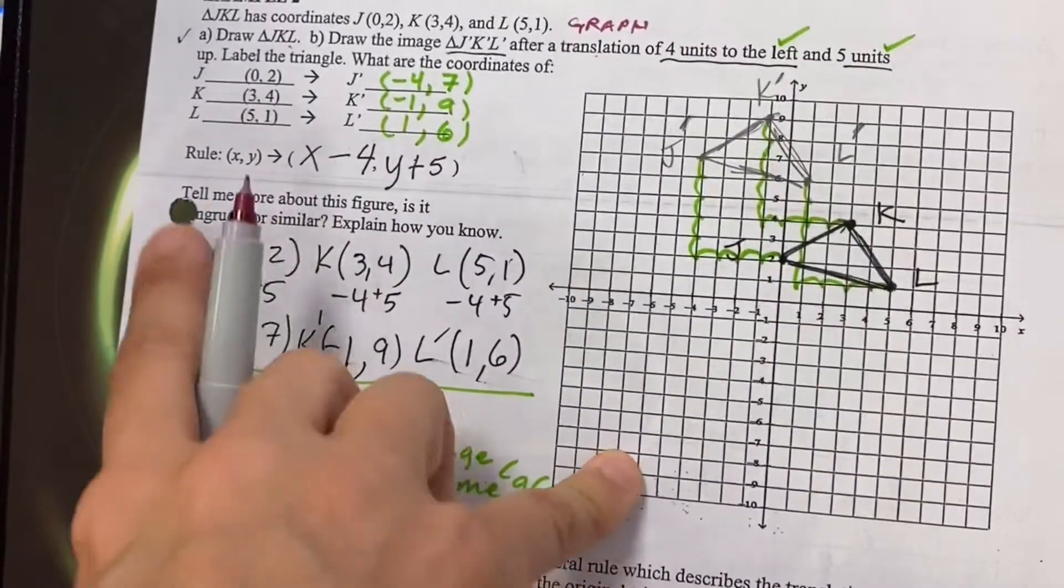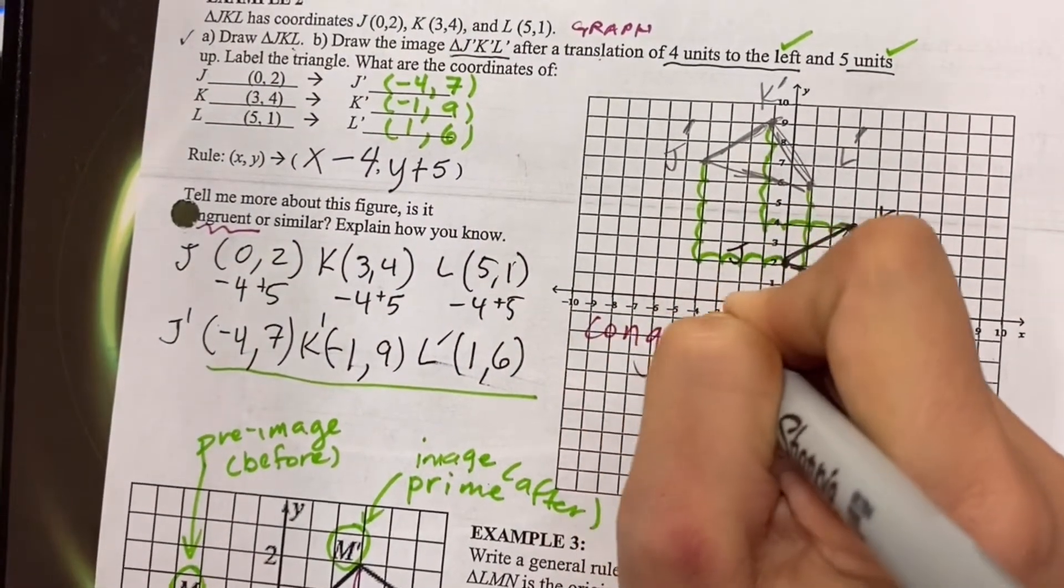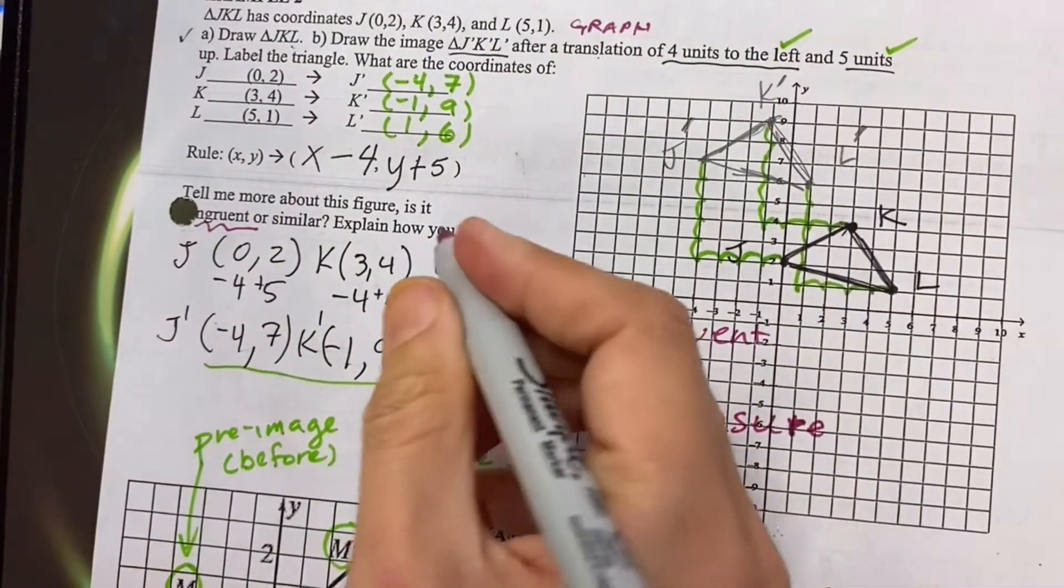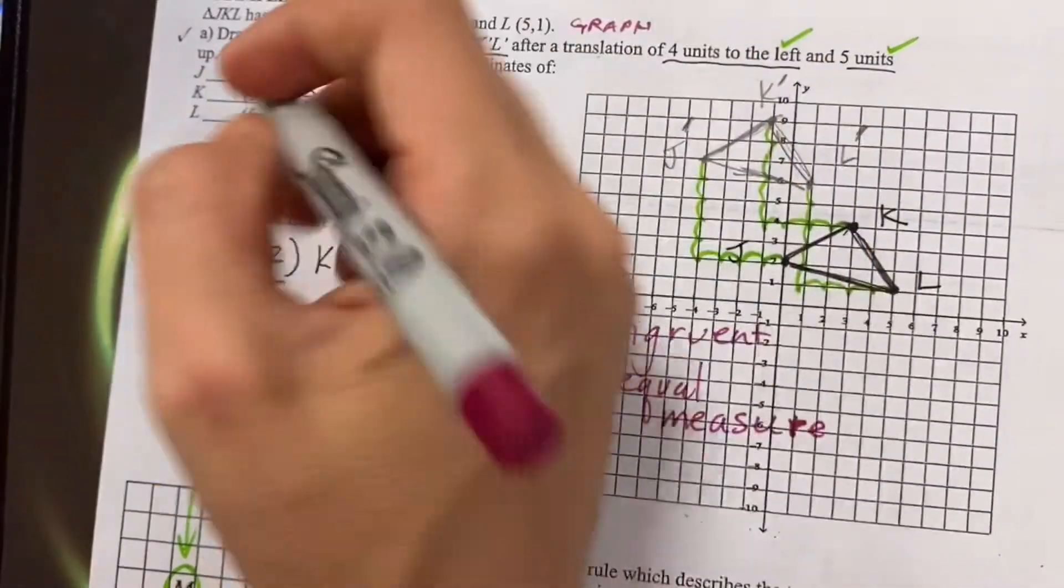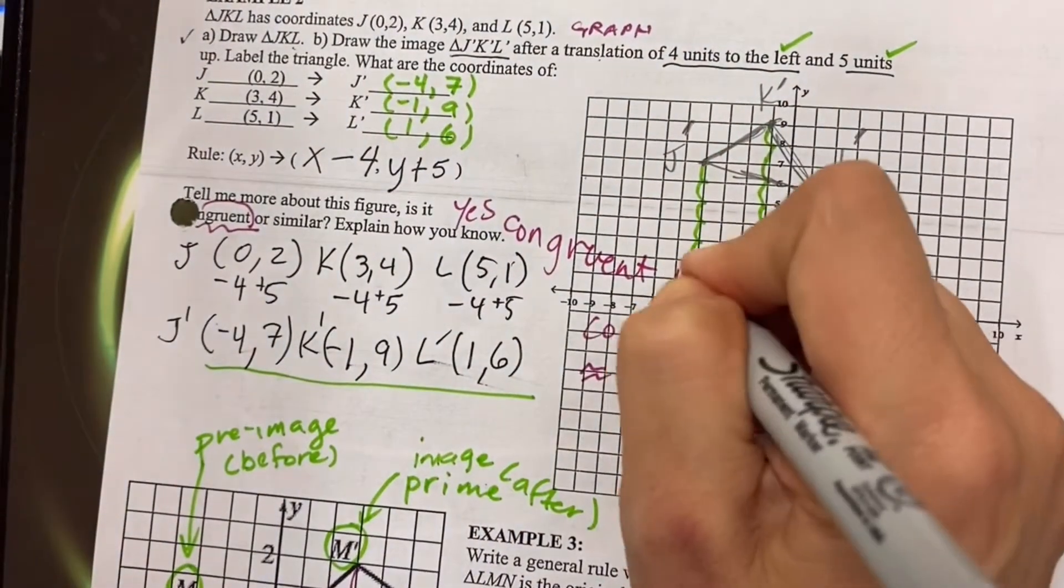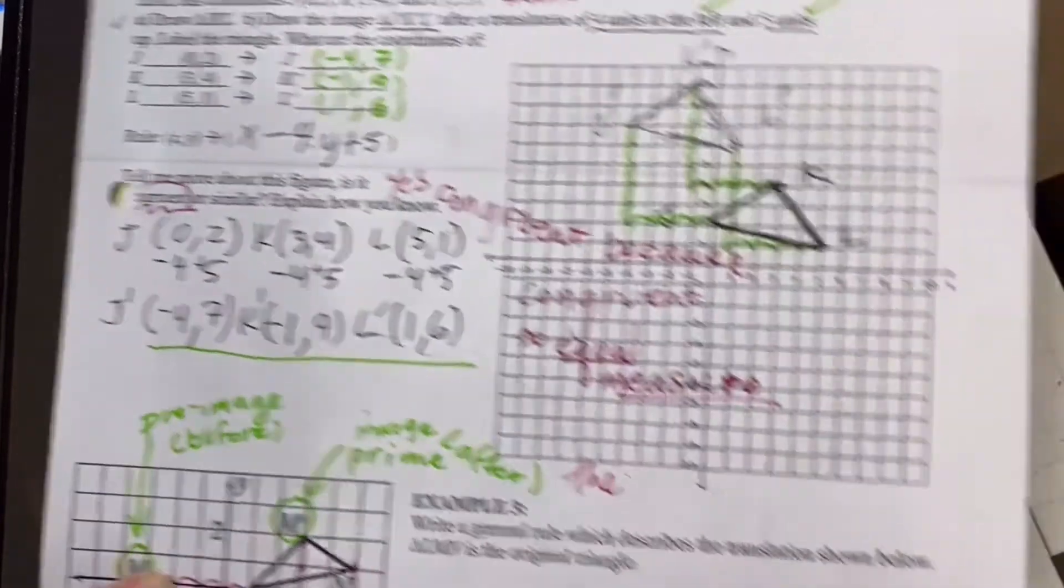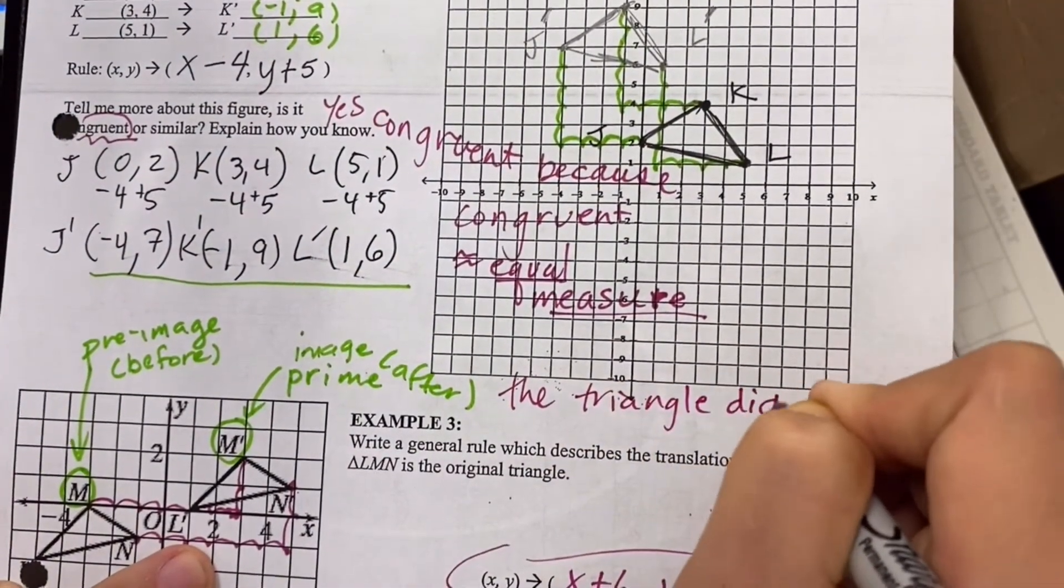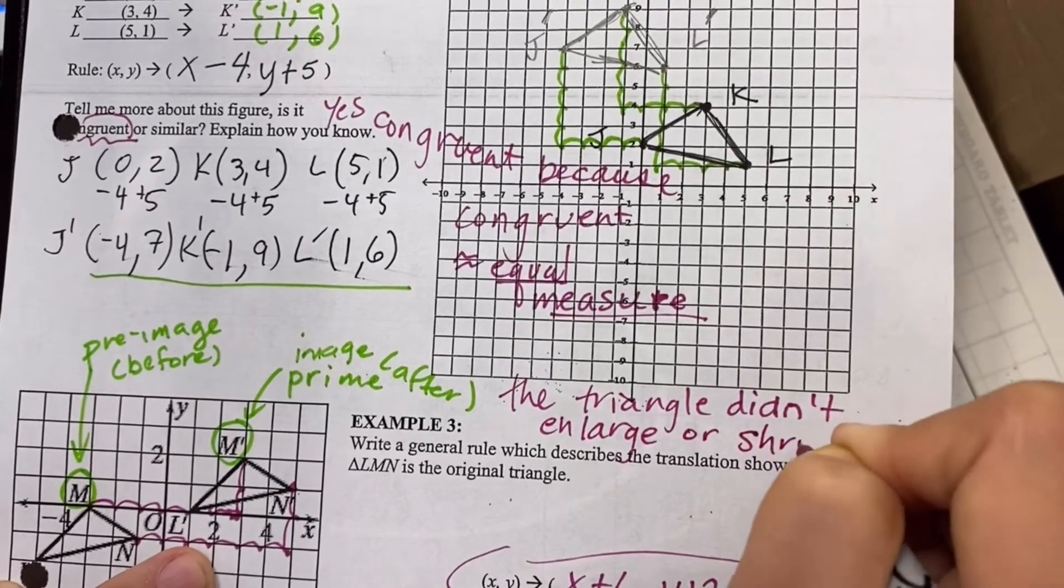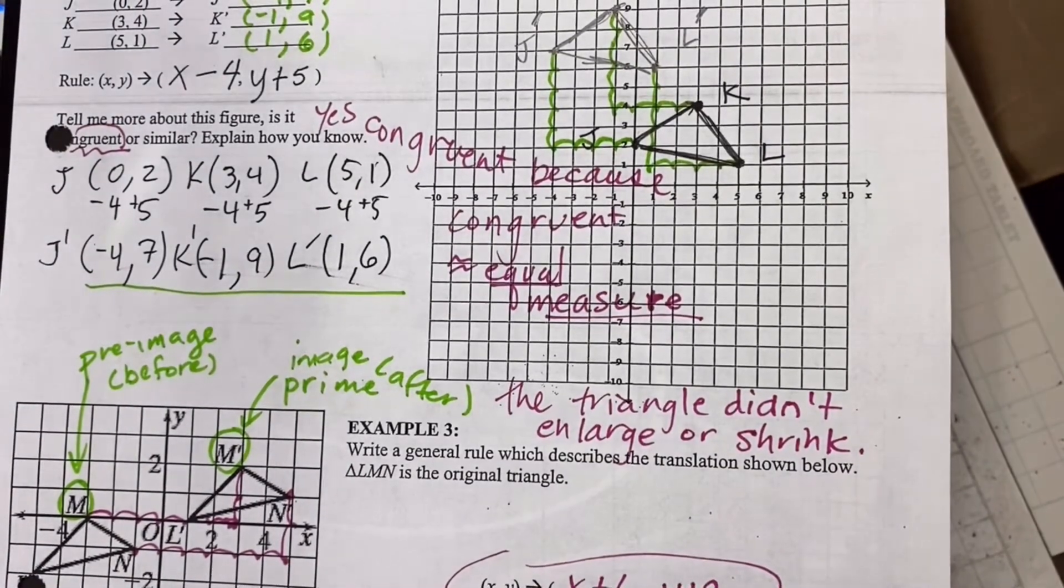So before we turn it over though, it looks like I skipped one. Let me go back up here. It says tell me more about this figure. Is it congruent or similar? So congruent means equal measure. So we actually did talk about this with the patty paper. I'm going to say yes. Yes, it's congruent because it is equal in measure. The triangle didn't enlarge or shrink. It stayed the same size. So it's congruent.